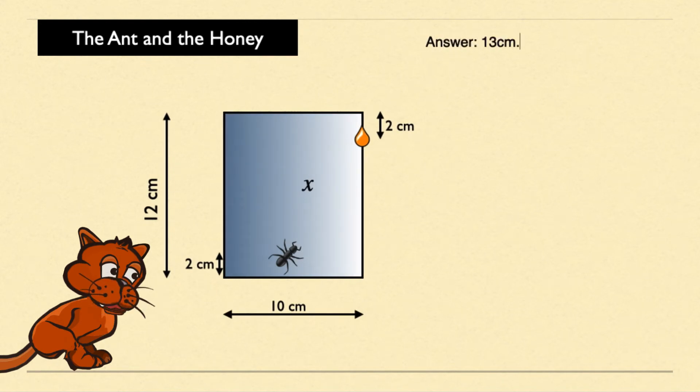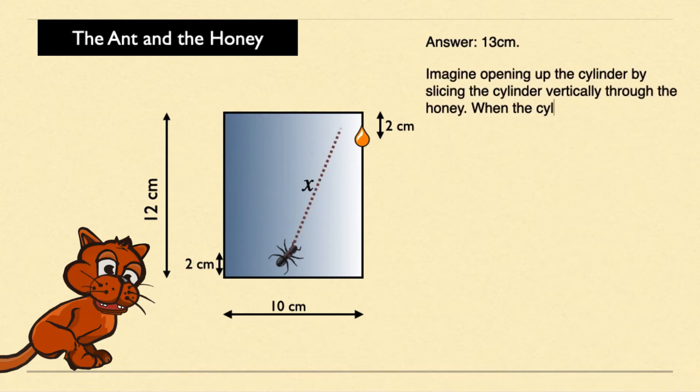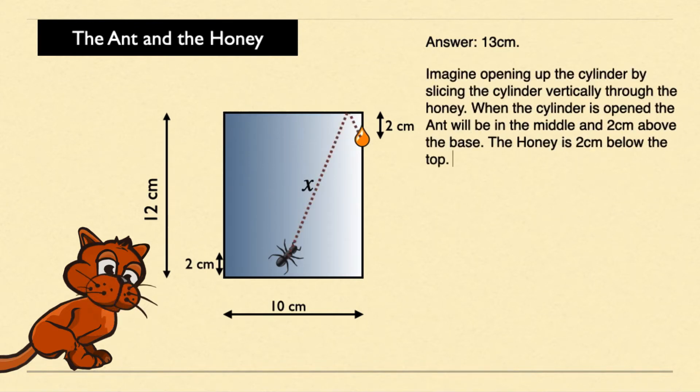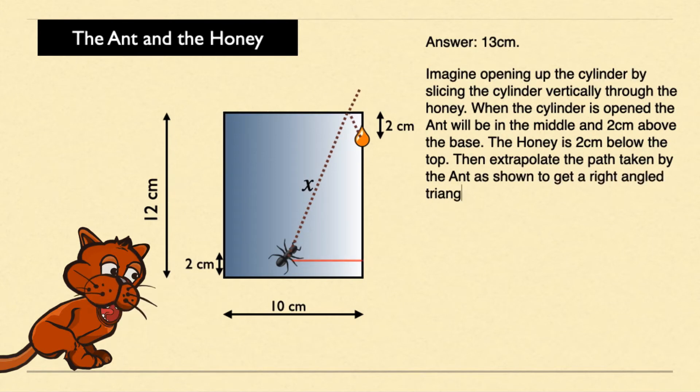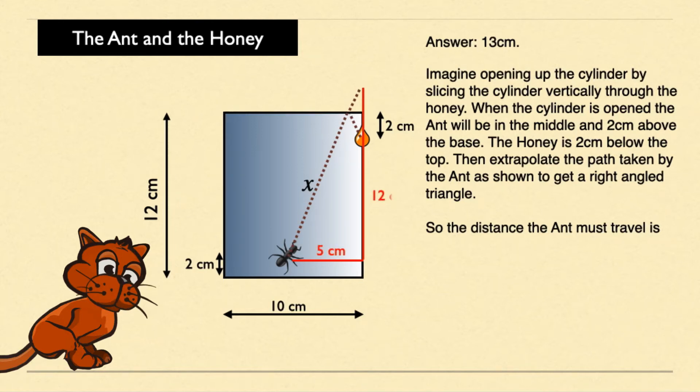The answer is thirteen centimeters. The way to solve this is to imagine opening up the cylinder by slicing the cylinder vertically through the honey. When the cylinder is opened, the ant will be in the middle and two centimeters above the base.